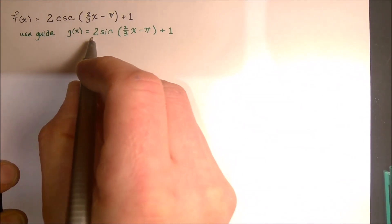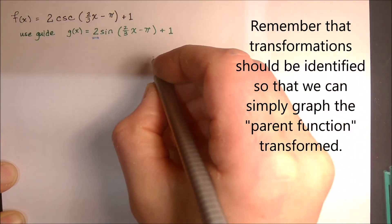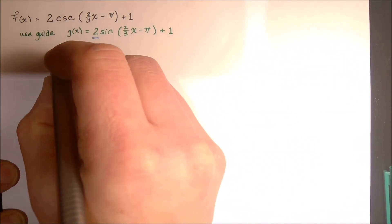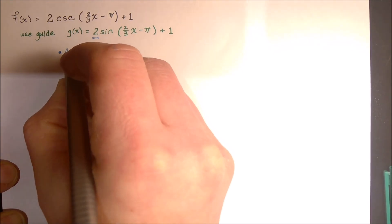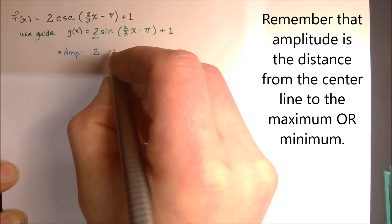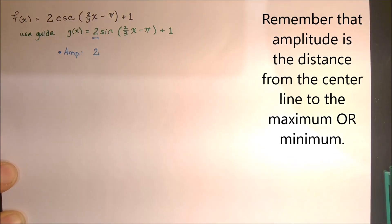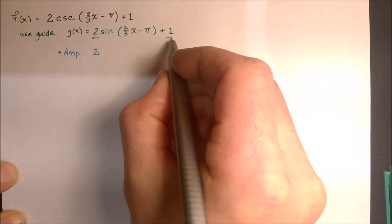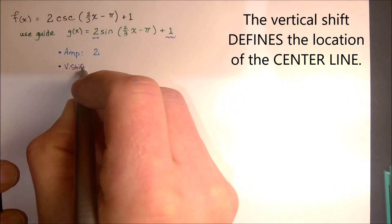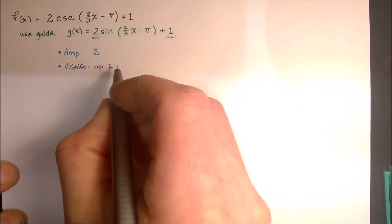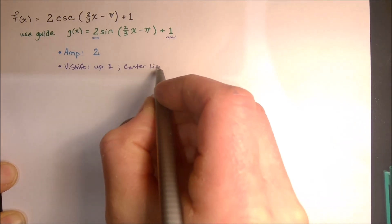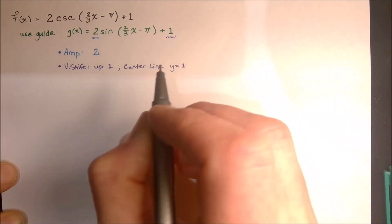Now all the other stuff that you did previously in terms of amplitude and period and phase shift and vertical shift, that's all going to be very similar. So all this stuff that I'm listing refers to the guide function. The amplitude is 2, that means it's going to go up to and down to from the center line. The vertical shift, which defines our center line, so our vertical shift is up 1. That means the center line is at y equals 1.